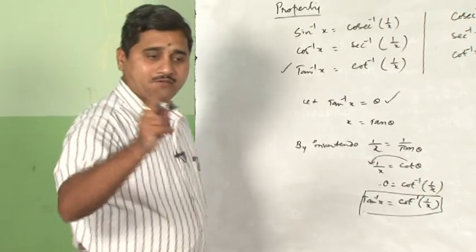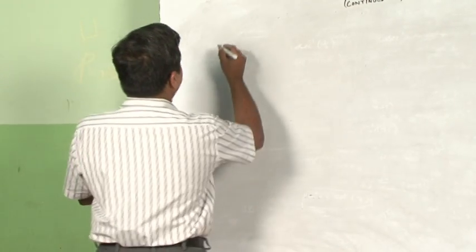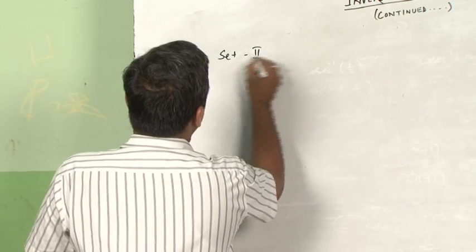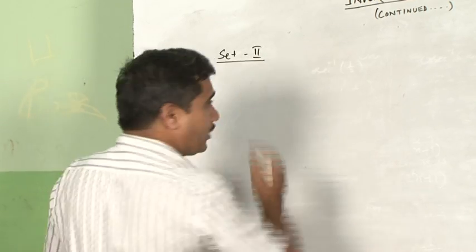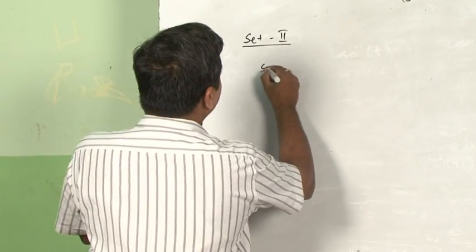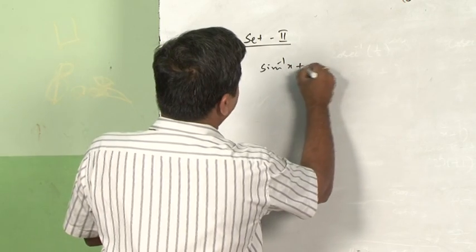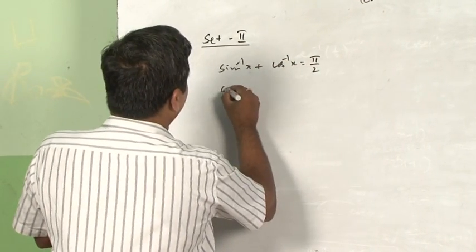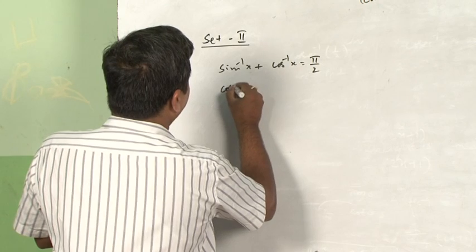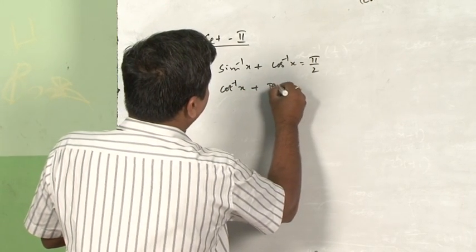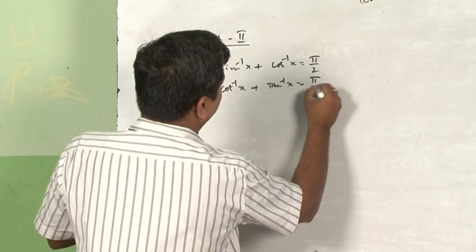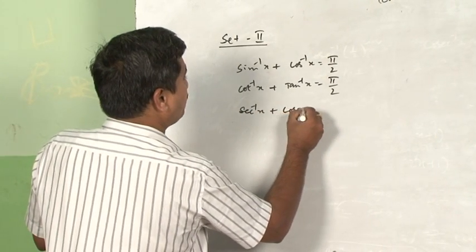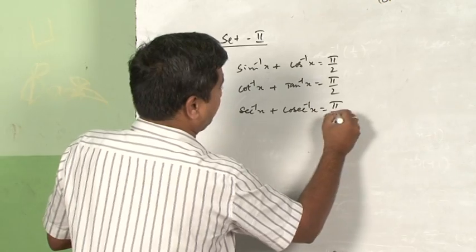We have proved the result, replacing theta according to our assumption: tan inverse x is equal to cot inverse 1 by x. Now let us go for Set 2 of properties. Sin inverse x plus cos inverse x is equal to π by 2. Cot inverse x plus tan inverse x is equal to π by 2. Secant inverse x plus cosecant inverse x is equal to π by 2.